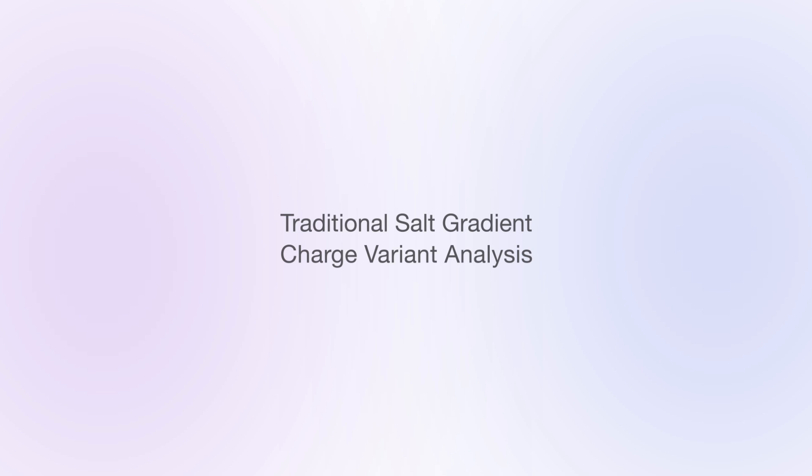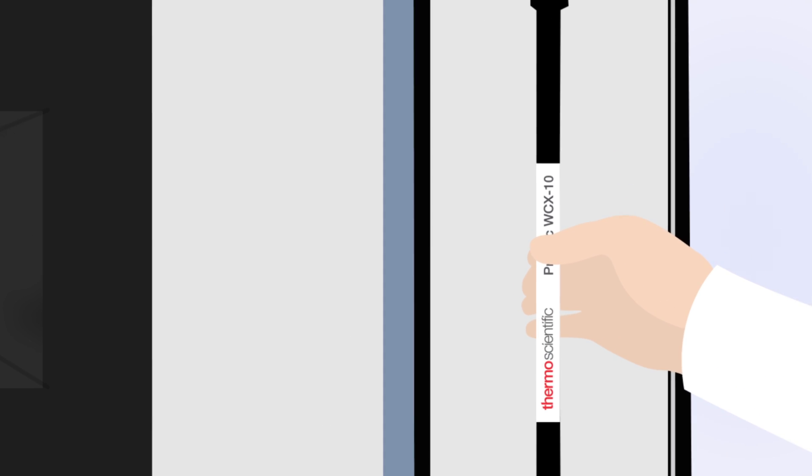Until recently, ion exchange chromatography with a salt-based gradient has commonly been used for analyzing protein charge variance.